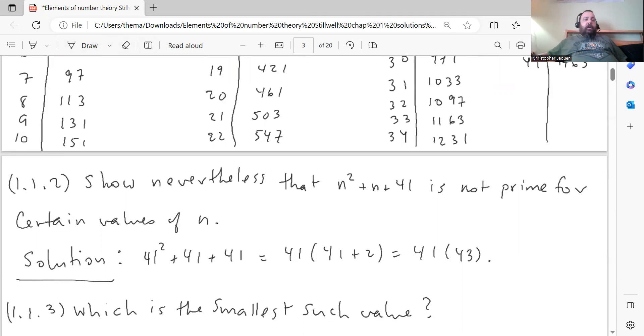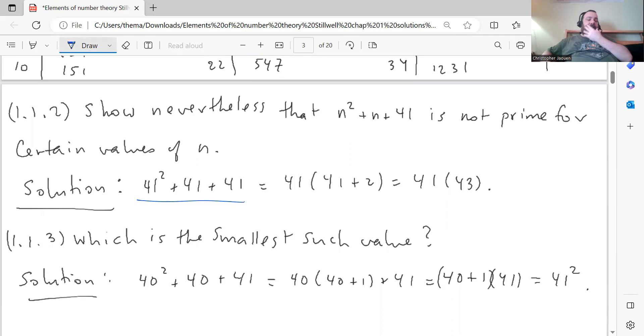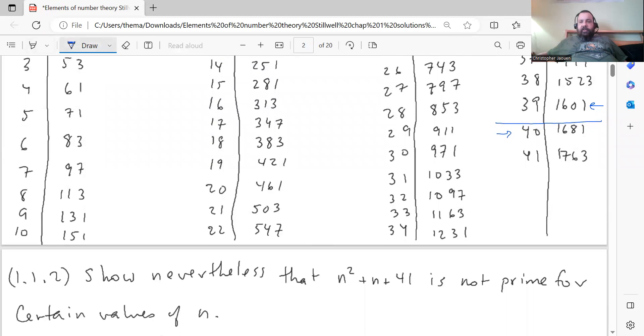Problem 1.1.2 says show nevertheless that n squared plus n plus 41 is not prime for certain values of n. There's an easy value to see that for. If you plug n equals 41 in, this is not a prime number because each term in the sum has a common factor of 41. So you can write the sum as the product 41 times 43, which is not equal to the value of the sum itself, which is 1763. So this number is not prime.